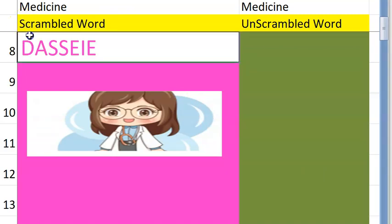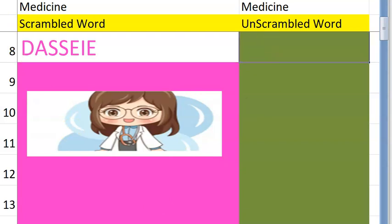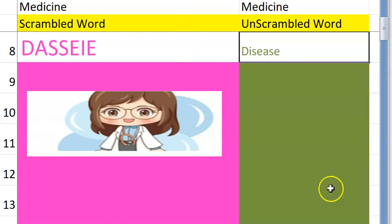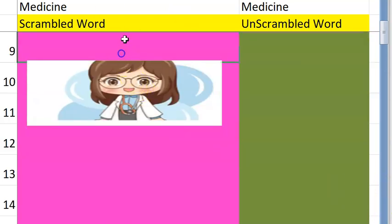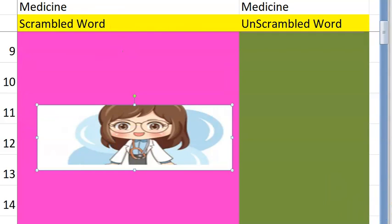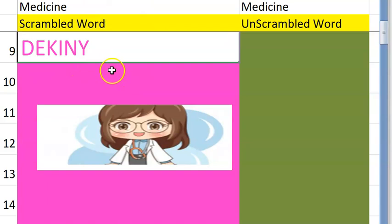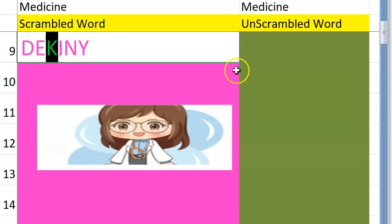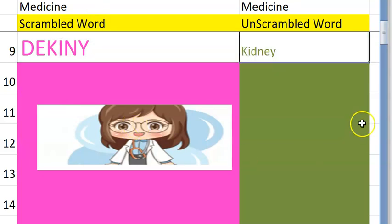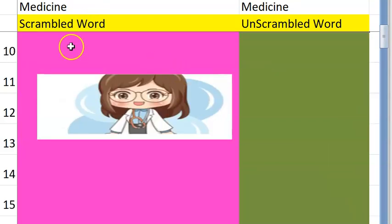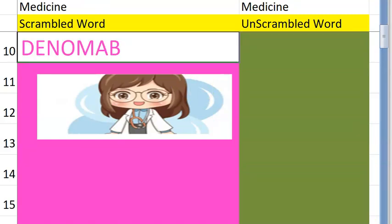The eighth one — the starting letter is D — yes, it's a disease. Very good, hope you got it! Let's go to the ninth one. I think it starts with a K, it's a part of your body — kidney. Very good, we have two kidneys, most of us.